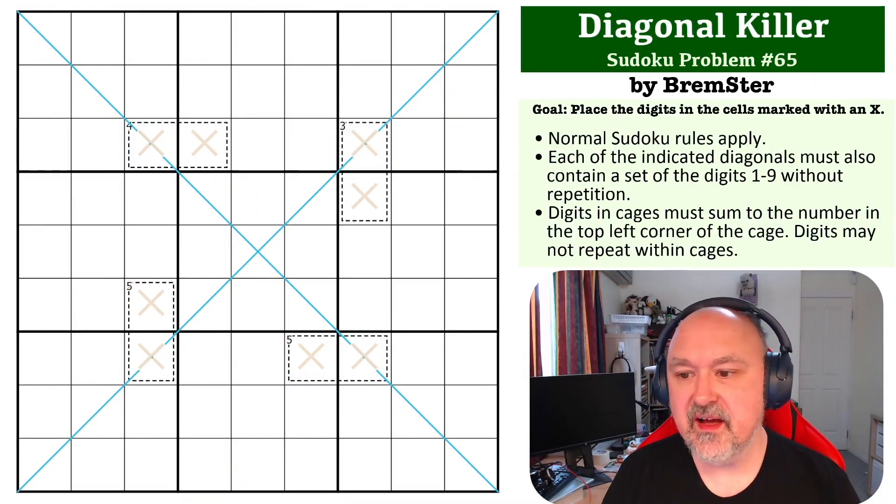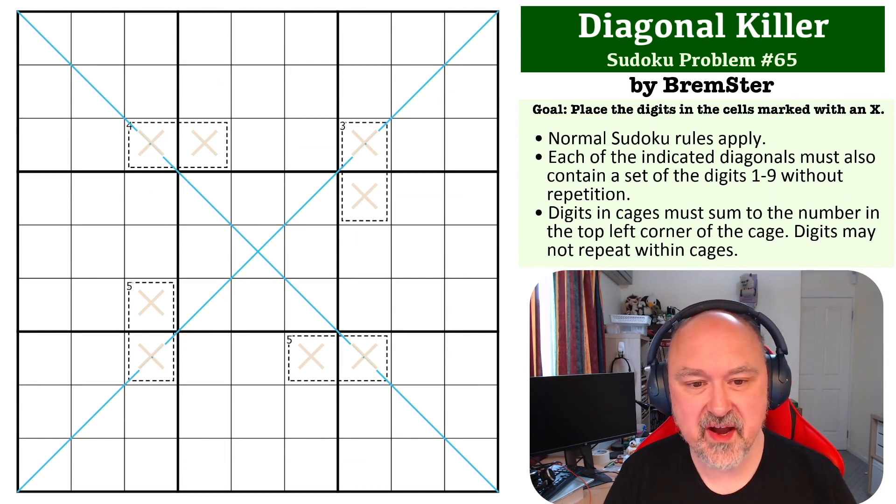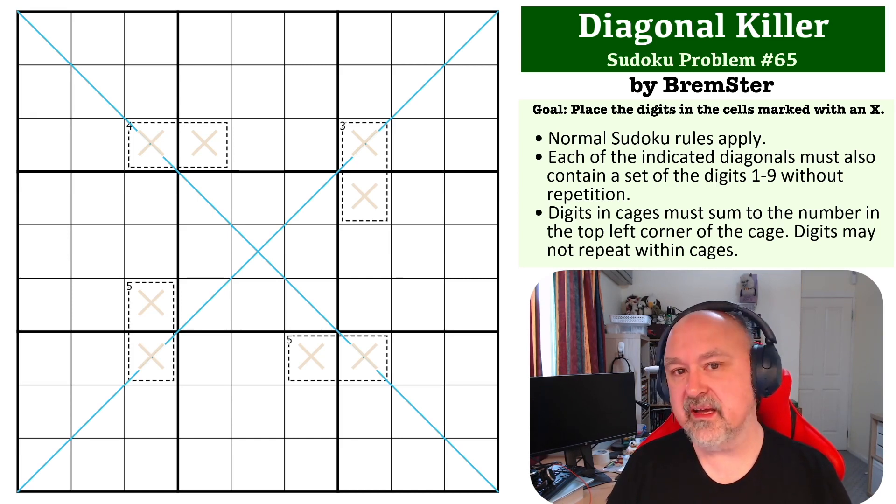Hey everyone, this is Brimster and this is puzzle number 65 in my Sudoku problem series. This is one I created a while ago and I remember liking it and haven't come back to revisit it, so let's hope I can pull this one off. This is a diagonal killer problem, so there are two rules in effect for this one.